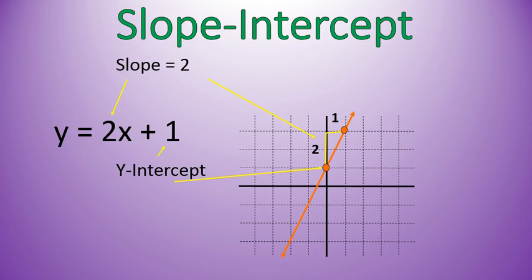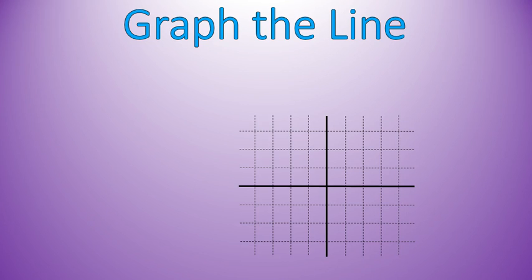So, those are the two pieces of information that help me be able to graph a line using this equation. I can use my y-intercept, and then my slope. So, I'd like you to go ahead and try this one out. Go graph that line. Y equals x minus 2. You can pause the video, try it out.